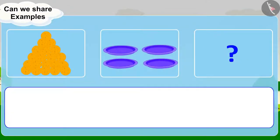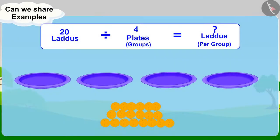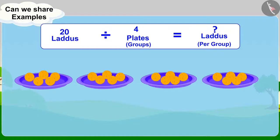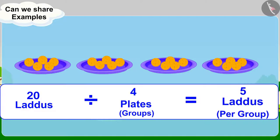We can write this question this way: 4 equal groups of 20 laddoos — how many laddoos per group? First, we will put 1 laddoo in each plate, and repeat it till all the laddoos are over. We can see that there are 5 laddoos in each plate. So, 4 equal groups of 20 laddoos equals 5 laddoos per group.